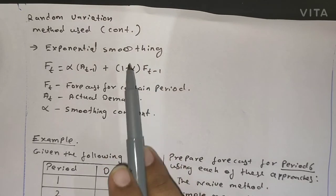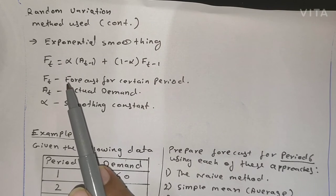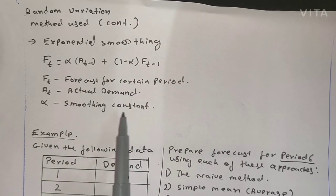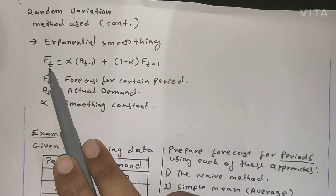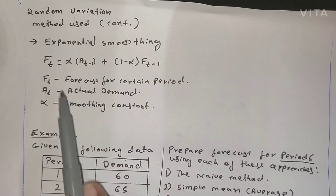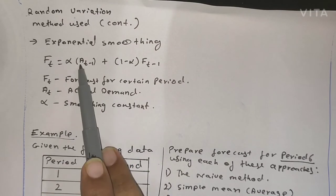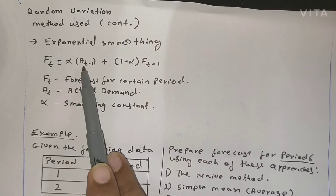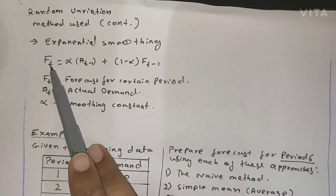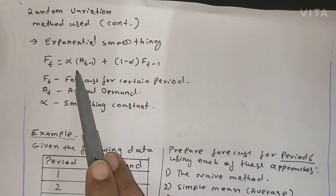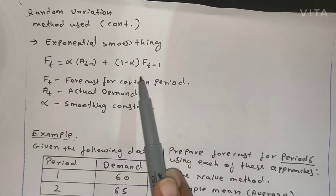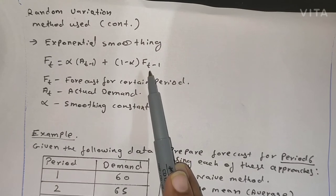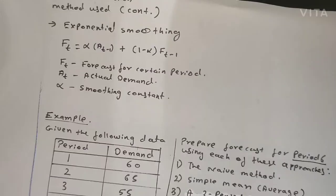The last method to find random variation is exponential smoothing. The formula is: F(t) = α × A(t-1) + (1 - α) × F(t-1), where alpha (α) is your smoothing constant, which will be given to you. F(t) is the forecast at a certain period. A(t-1) is the actual demand of the previous period — so if t is February, A(t-1) is January. F(t-1) is the previous forecast — so if t is February, F(t-1) is January's forecast.